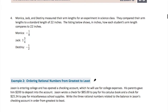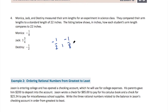Number four: Monica, Jack, and Destiny measured their arm length for an experiment in science class. They compare their arm lengths to a standard length of 22 inches. Monica's arm is one-eighth of an inch less, Jack's is one and three-quarters inches more, and Destiny's is one-half inch less. The furthest from the standard in the shorter direction is negative one-half for Destiny — that's the shortest. Monica at negative one-eighth is next. And then Jack is bigger than the standard, so he's positive one and three-quarters.